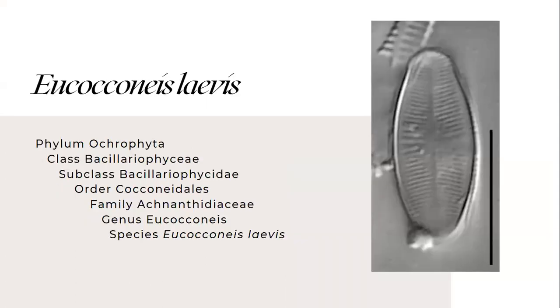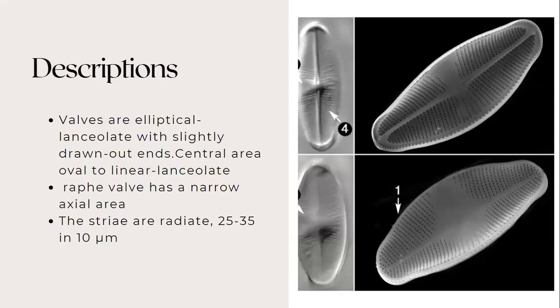The next species will be described by Hengi. The next species is Eucocconeis davisii. This species belongs to the family Achnanthidiaceae. For the description, valves are elliptical lanceolate with slightly drawn out ends. The central area are oval to linear lanceolate.